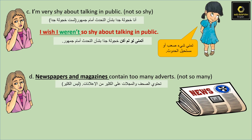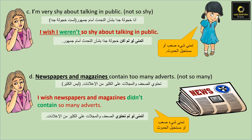Newspapers and magazines contain too many adverts. We're going to use 'not so many'. I wish newspapers and magazines didn't contain so many adverts. في عنا هون تمني ظرف مستحيل، لأنه الجرائد ممولة من قبل الإعلانات فدايما رح يكون فيها إعلانات كتيرة. فهون عم بتمنى ظرف مستحيل.